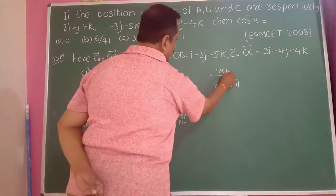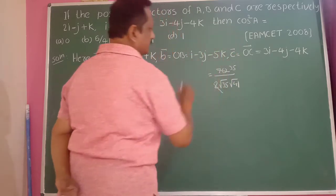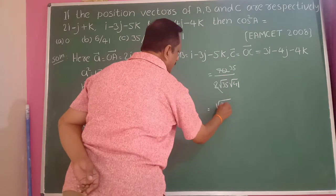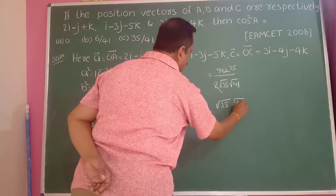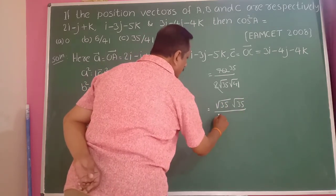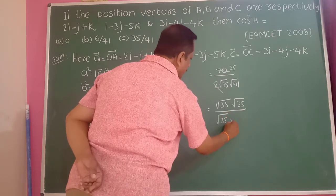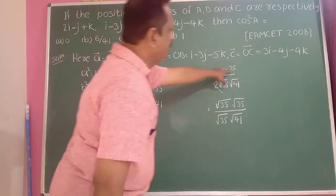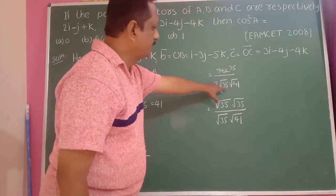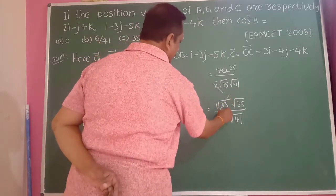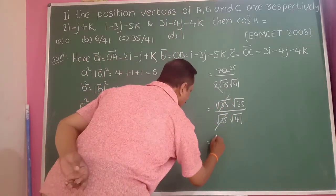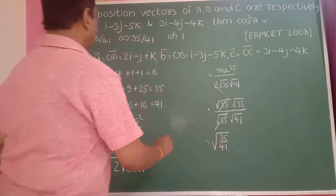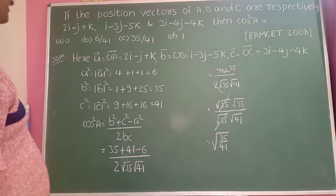Now 70 can be written as 2 times 35. The 2 cancels, and 35 in the numerator can be written as root of 35 times root of 35, divided by root of 35 times root of 41. The root 35 in numerator and denominator cancels. This gives cos A equal to root of 35 divided by 41, i.e., root of 35 by 41.